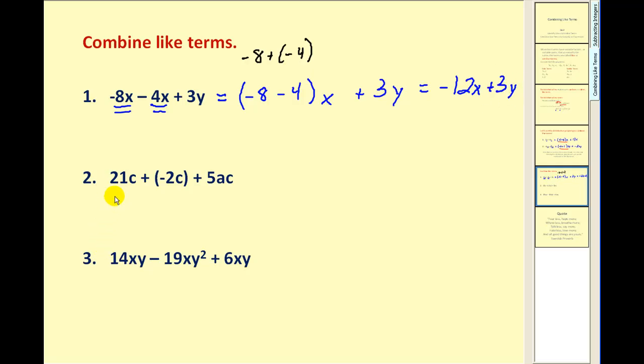Okay, for these last two, I'm going to see if we can skip showing the distributive property and combine the like terms. So we have two like terms here. Twenty-one c and negative two c. So to combine those, essentially we have to add the coefficients. So twenty-one plus a negative two would give us nineteen. The variable part stays the same. So we have nineteen c and then plus five ac.